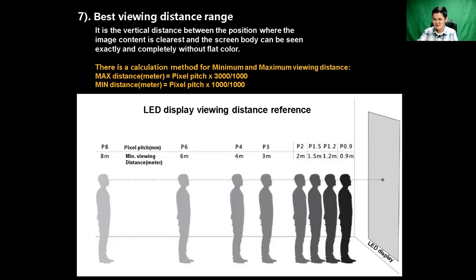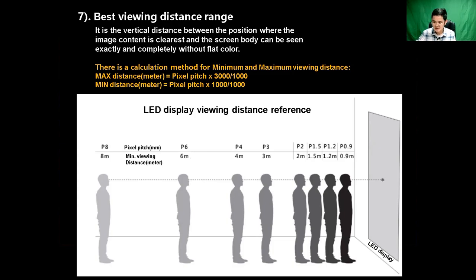For example, for a display with a pixel pitch of 8mm, the best viewing distance is 8 to 24 meters. If the distance is closer than the minimum distance, the individual pixels of the display will be distinguishable and graininess will be stronger. And if you stand far away, the human eyes cannot distinguish the fine details of the image.